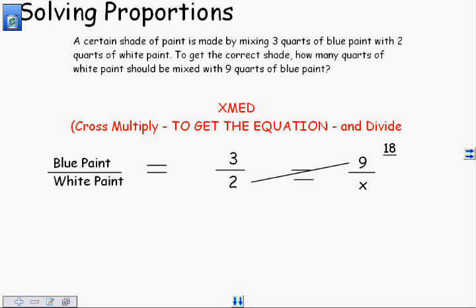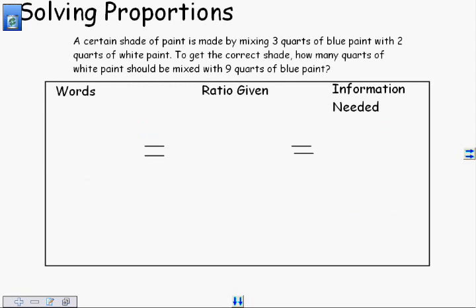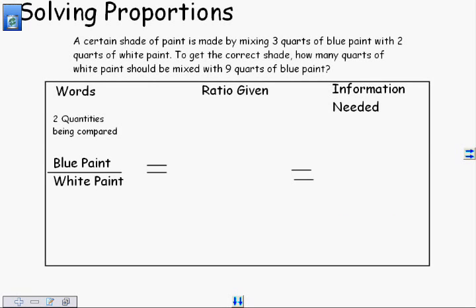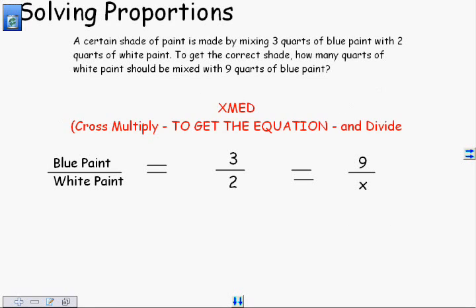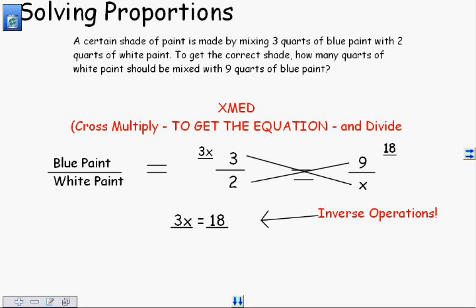The process, we'll go back to the beginning. You have got to make sure you write down your words, the two quantities that are being compared. Once you have those words written, you need to always go back to them when you go to write the ratios. We needed to make sure the 3 went on top because that was the blue paint, and the 2 went on bottom because that was the white paint. We wrote our last ratio, 9 quarts of blue paint, and we didn't know how many quarts of white paint, so we just put an X there. You're going to use the XMED tool that's in your tool belt to solve this equation. We're going to cross multiply to get the equation and divide. Cross multiply. Set up the equation. Inverse operation is division. We divide it out, and we got 6. That is your step-by-step method of solving proportions.